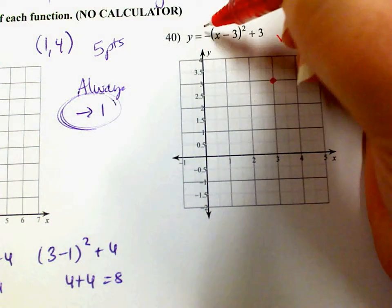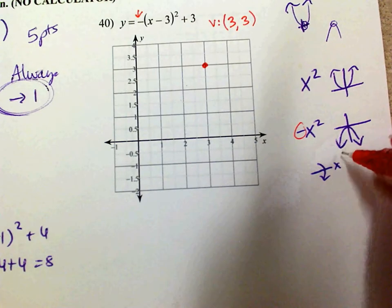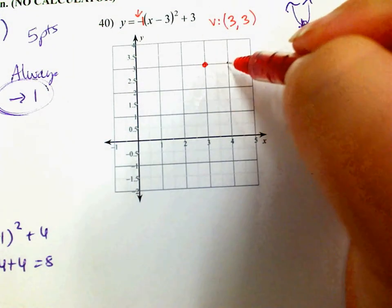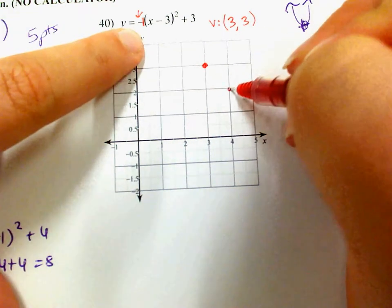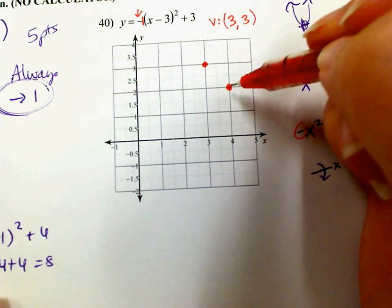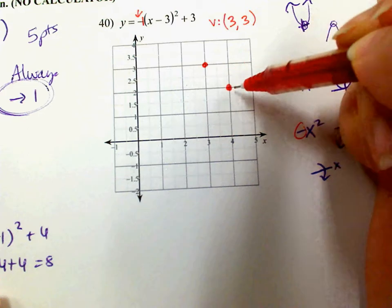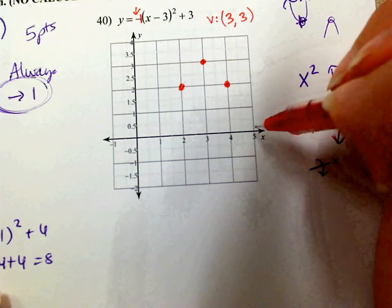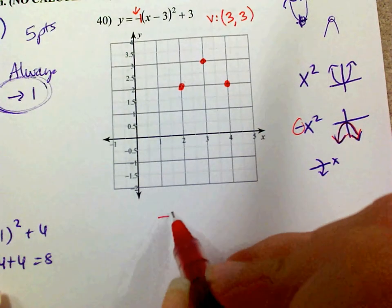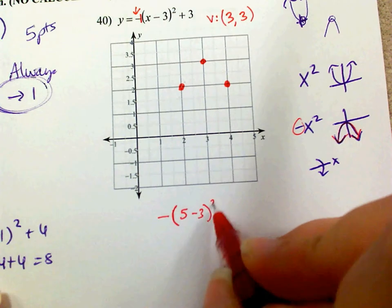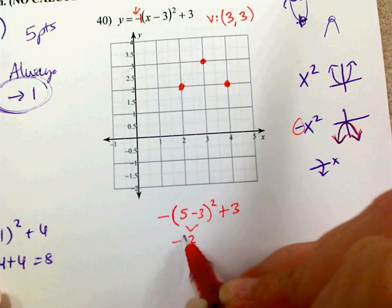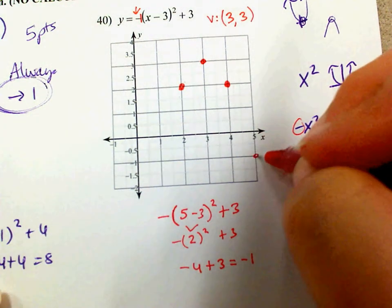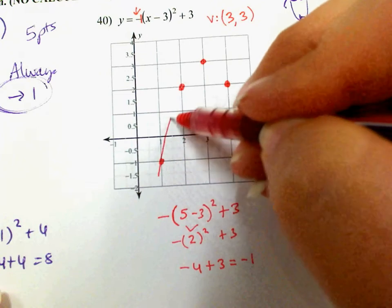Now there's a negative in the front. If there's a negative in the front, that means my parabola is going to open down. We always go to the right one first — from 3 to 4. Because this is a negative 1, I'm going to go down 1 instead of up 1. Symmetry says going left 1 also means going down 1. To find one more point, I'll plug in x equals 5: negative (5 minus 3) squared plus 3. Five minus 3 is 2, two squared is 4, so negative 4 plus 3 is negative 1. So at x equals 5, y equals negative 1, which means at x equals 1, y equals negative 1 as well.